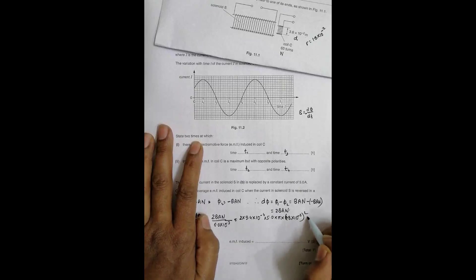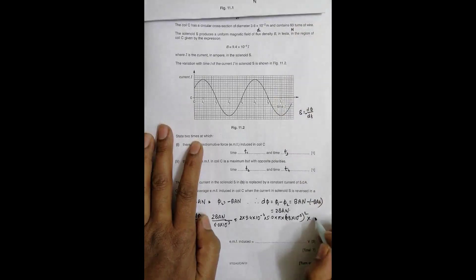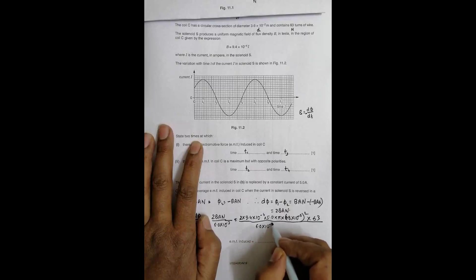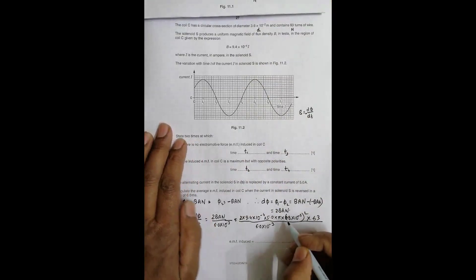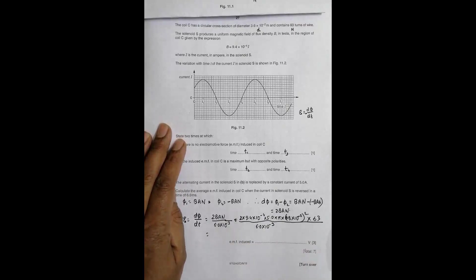Everything here: πr²BN. B = 9.4 × I, then time is 6.0 × 10⁻³. If I do the calculation: 2 × 9.4 × 10⁻⁴ × π × 5 × (1.8 × 10⁻²)² × 63, divided by 6 × 10⁻³.